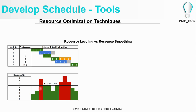If you take the resource limit — the constraint that the project should not exceed five persons at any given point — there are periods where three and four man-months overlap, meaning seven resources are used. At other points, six, eight, and six resources are used, all exceeding the limit.